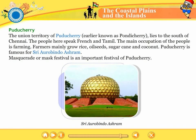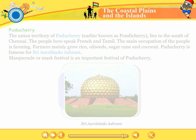The union territory of Puducherry, earlier known as Pondicherry, lies to the south of Chennai. The people here speak French and Tamil. The main occupation of the people is farming. Farmers mainly grow rice, oilseed, sugarcane and coconut. Puducherry is famous for Sri Aurobindo Ashram. Masquerade or mask festival is an important festival of Puducherry.